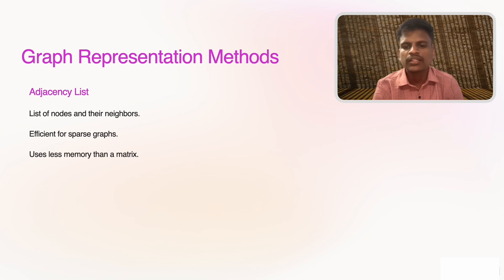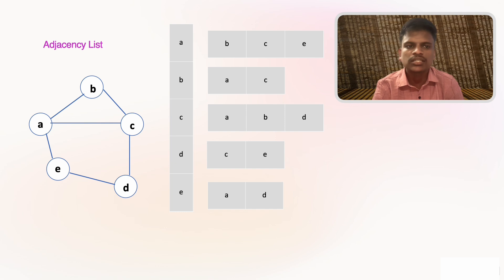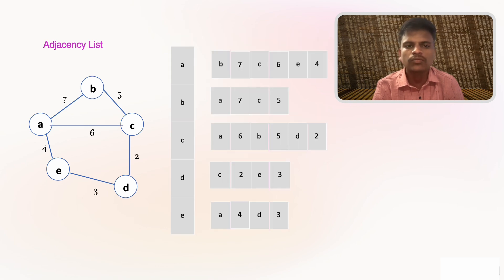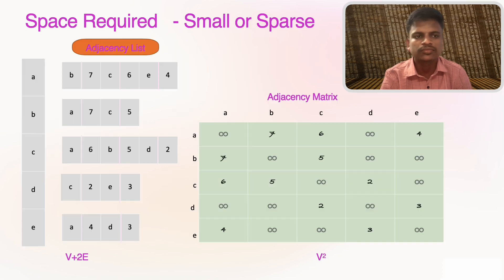Next, adjacency list: this is a list where each node has its own list of adjacent nodes. It's more memory efficient, especially for sparse graphs where there are fewer connections. For example, if node A is connected to nodes B and C, then in an adjacency list, A's list will include B and C. Adjacency lists are represented in list format, and weighted graphs can also be represented this way. Space required is smaller for sparse graphs. Traversal is easy and memory usage is less.